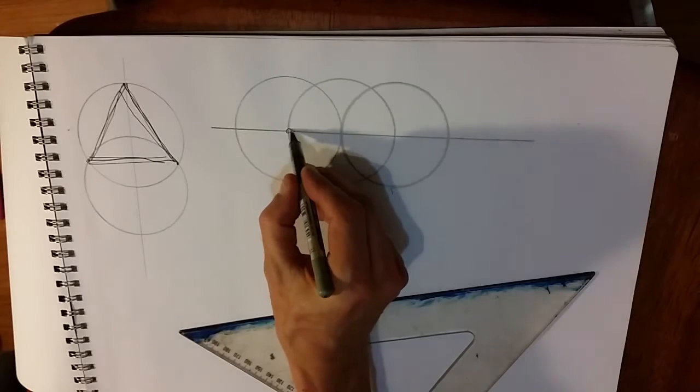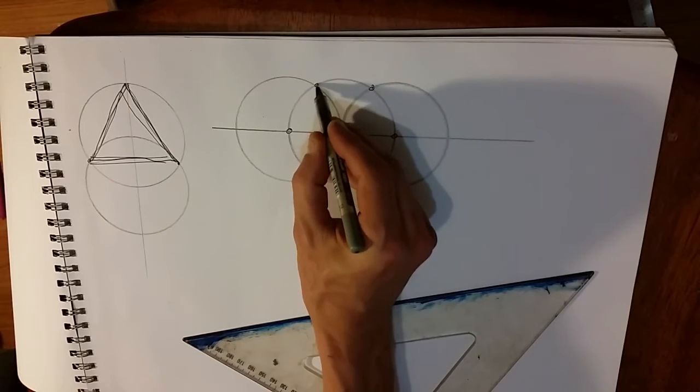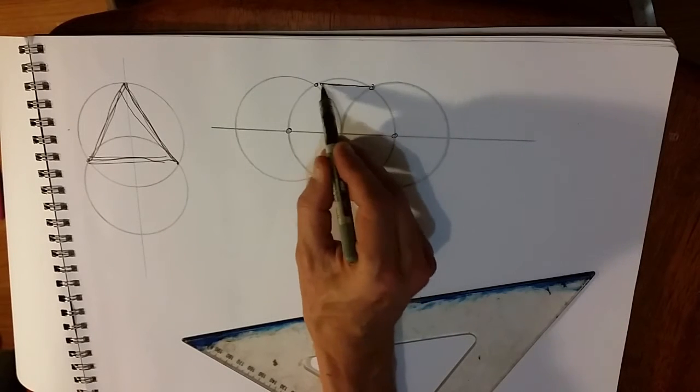Now we have one, two, three, four, five, six points creating a perfect hexagon.